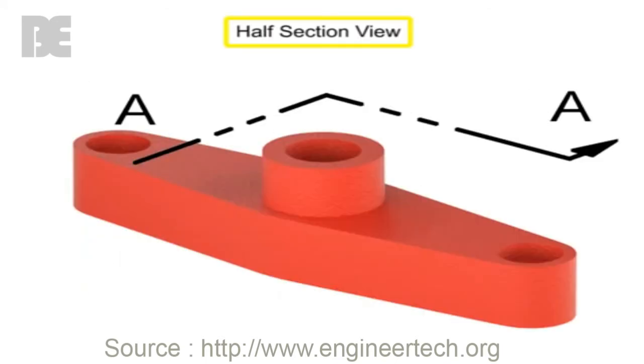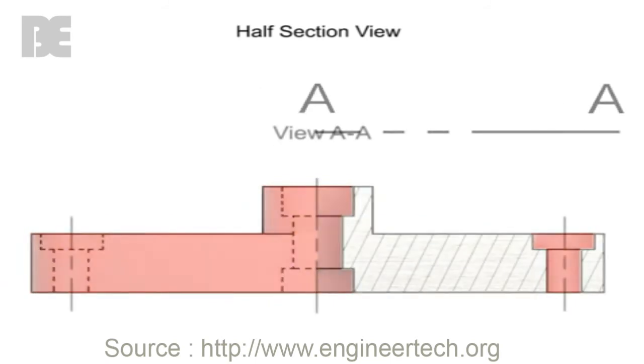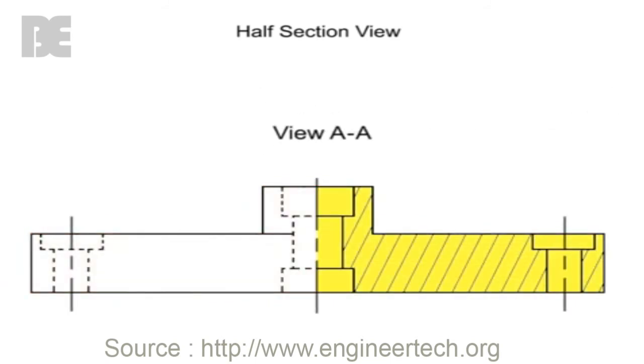Half section views are created when a section is taken from only one half of a symmetrical object. The cutting plane line for this type of view has only one arrow since you are only viewing the section on one half of the object. One half of the new view shows the section and the other half shows the original view.